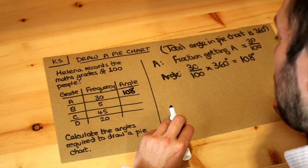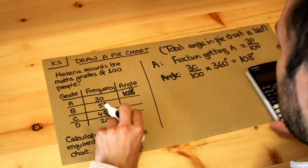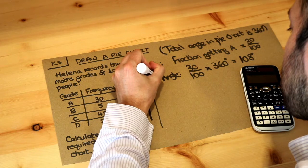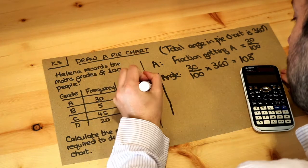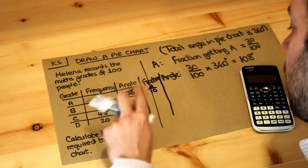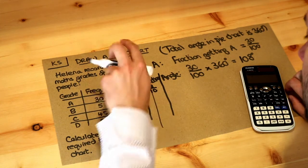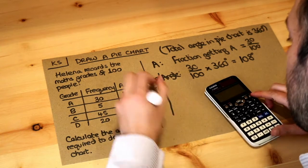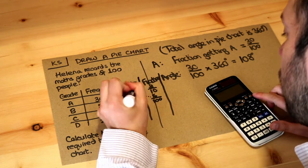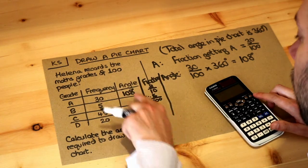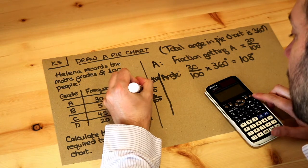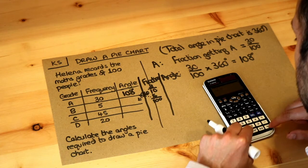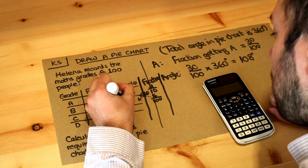Now let's similarly find the fractions for each of the other ones. The fraction of people that got B was 5 out of 100, which is the same as 1 out of 20. And then we do 5 hundredths of 360 degrees. So 5 hundredths times by 360 is 18 degrees.